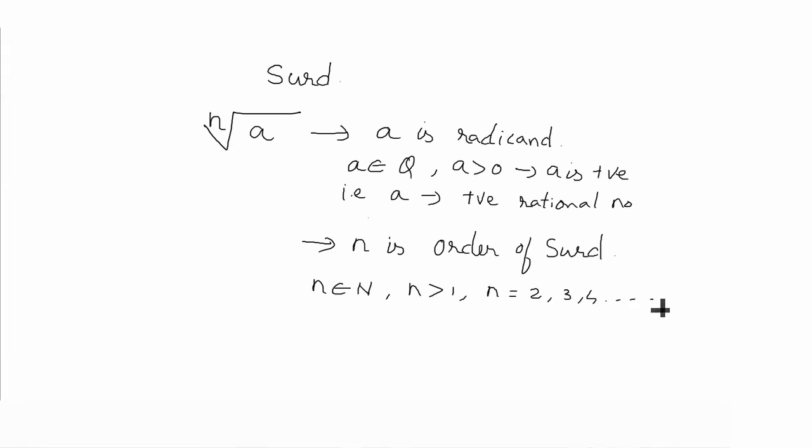n can be 2, 3, 4, so on. And nth root of a as whole should have an irrational value. So, when this condition is created, then it is called as surd.